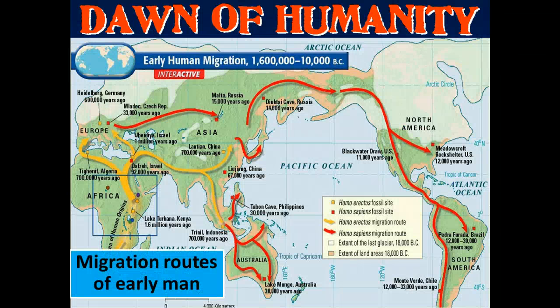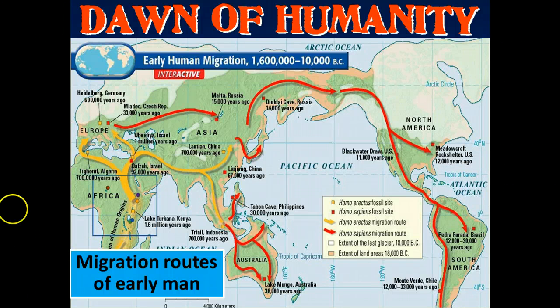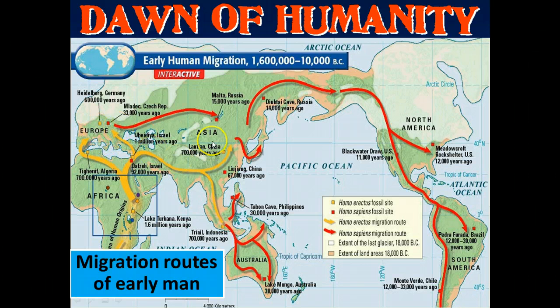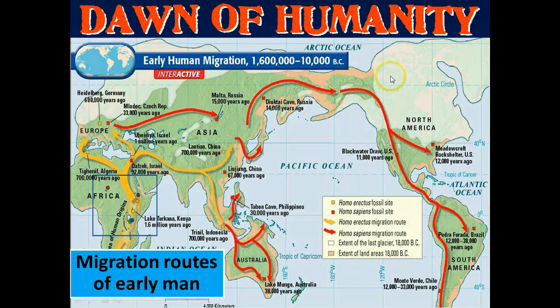It was about a million years ago when man began to move out of Africa and began to move into Europe, different parts of Asia, and even cross the Straits into North and South America.